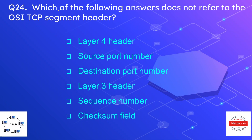Question number twenty-four is: which of the following does not refer to the OSI TCP segment header? The options are layer four header, source port number, destination port number, layer three header, sequence number, and checksum field. The correct option — meaning the one that does NOT belong — is layer three header. The TCP segment header is a layer four header, so layer three does not belong.